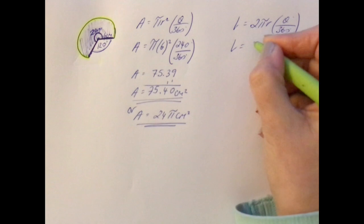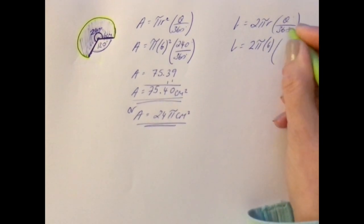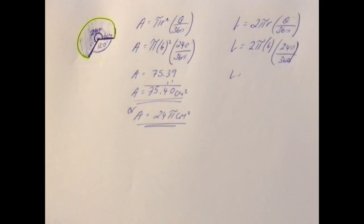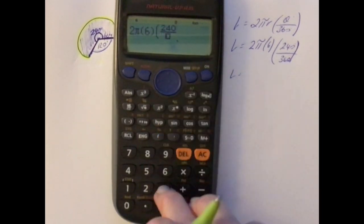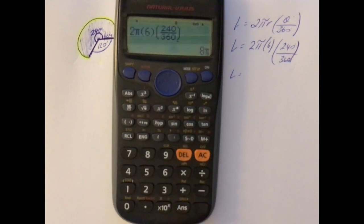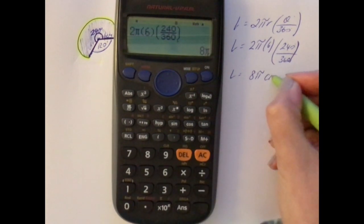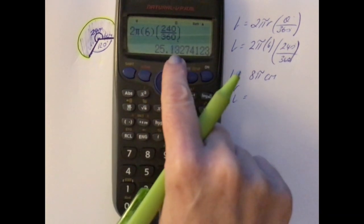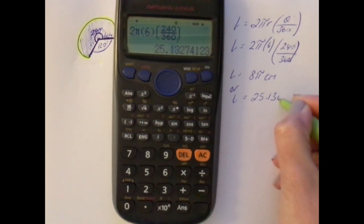So let's get the length of the arc first. So 2, we leave pi as pi, the radius of course is 6, put it in brackets, and our angle we've figured out already is 240 over 360. Let's close down that bracket and then I'll do that on the calculator. So we have 2π bracket 6 bracket 240 on top, 360 on the bottom. And we end up with 8π if we want it in terms of pi, or we'll do decimal places as well, 25.13 centimeters.